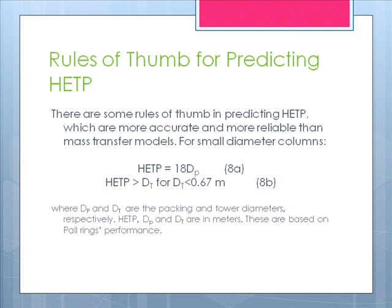Equation 8a: HETP is equal to 18 d_P. Equation 8b: HETP is greater than D_T for D_T less than 0.67 meters. Where D_P and D_T are the packing and tower diameters respectively, and HETP, D_P, and D_T are all in meters.